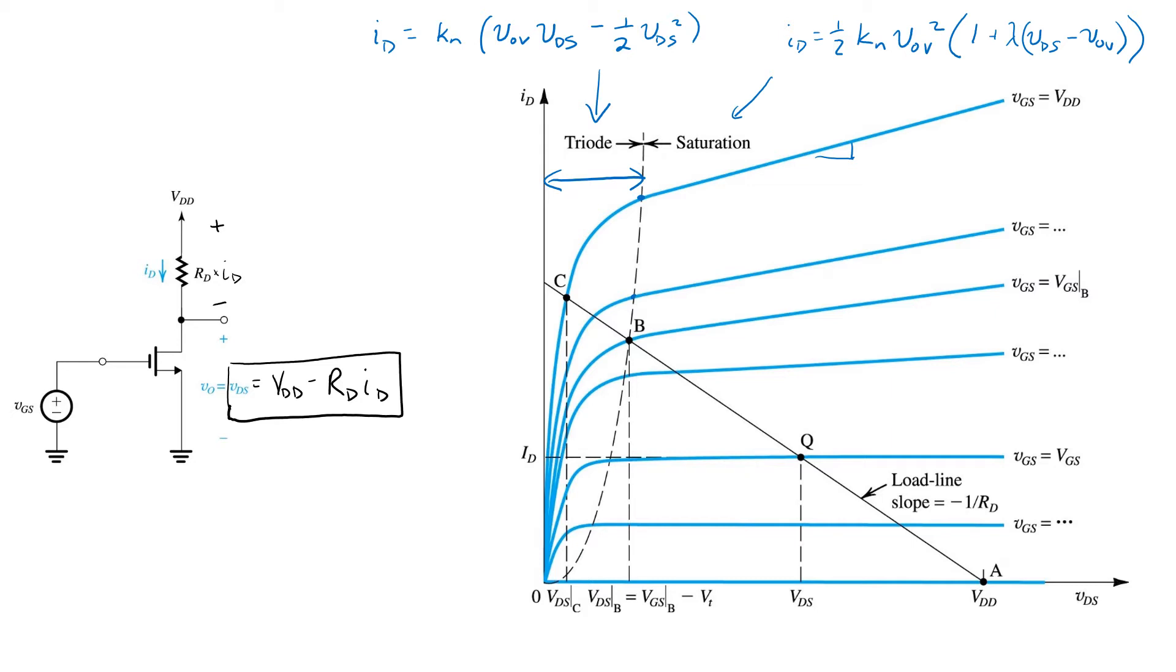We can plot this relationship on the same axis. The resulting plot is a line that we call the load line, and it's shown there in black. So, again, as far as the transistor is concerned, the circuit operating point has to lie on the appropriate blue curve.